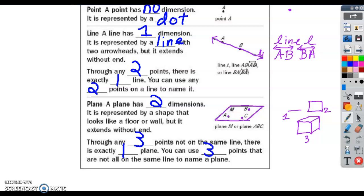We can name this plane ABC, or we can name it plane CBA, or CAB, or any order is fine. Notice the capital M has no dot next to it. That's actually another name for the plane. Through any three points not on the same line, there is exactly one plane, and you can use three points that are not all on the same line to name that plane.